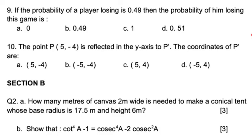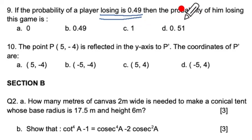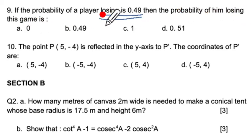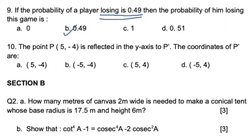Question 9: the probability of a player winning is given; find the probability of him losing the game. Since the probability of losing is the complement, the answer remains B.